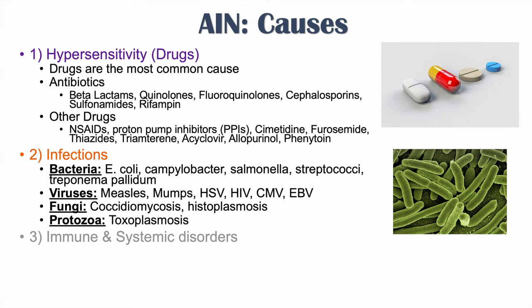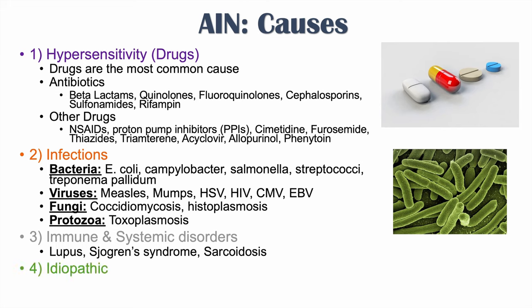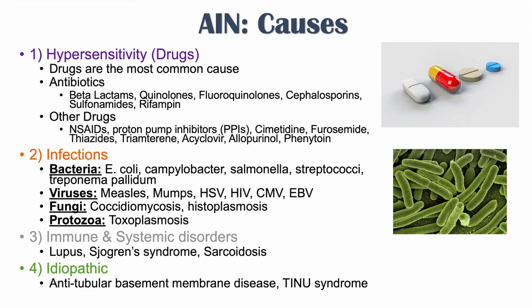About 10% to 15% of cases are due to underlying systemic conditions. Immune and systemic disorders that can cause AIN include lupus, Sjogren's syndrome, and sarcoidosis. Idiopathic cases, where the etiology is not discovered, may be related to antitubular basement membrane disease or TINU syndrome.